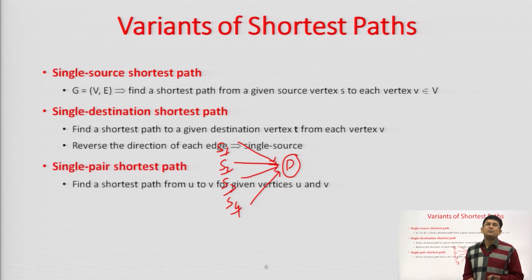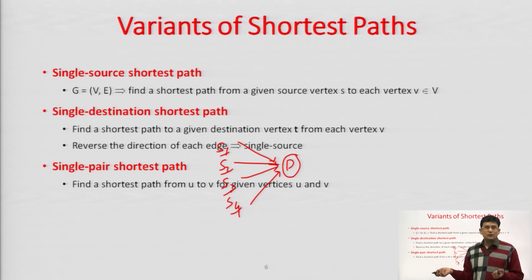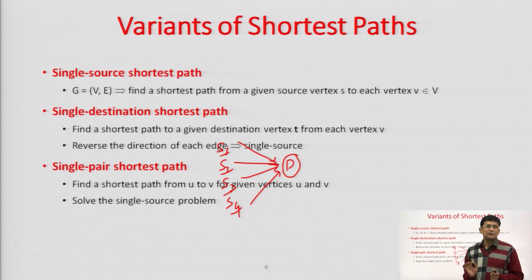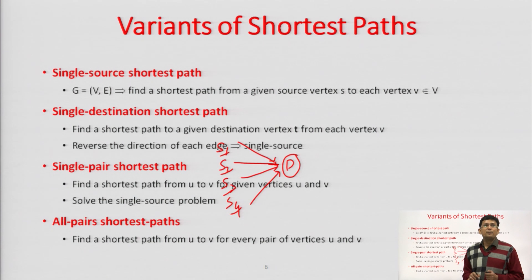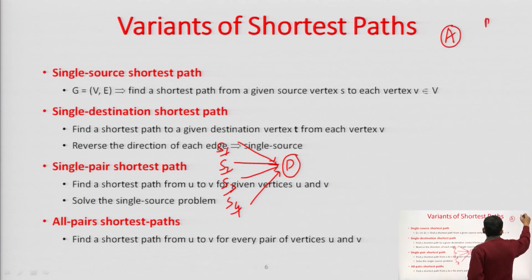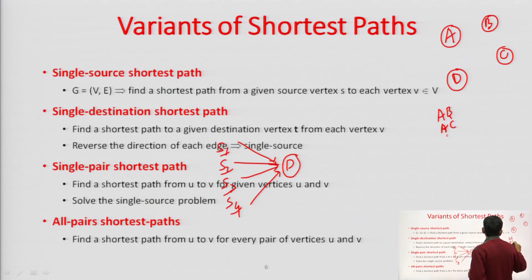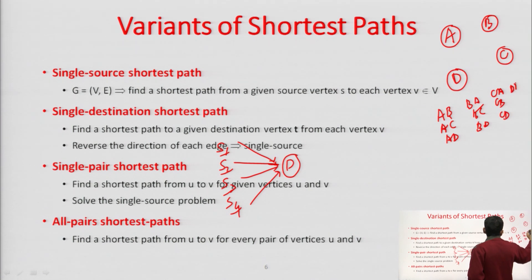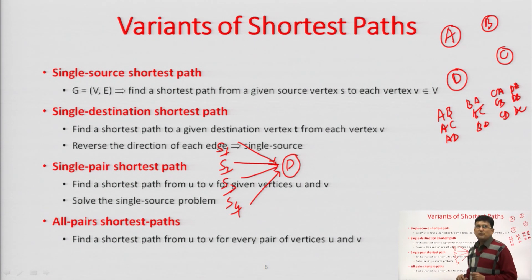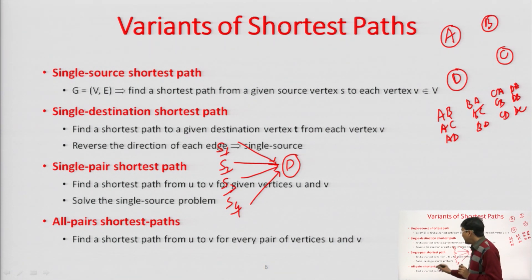There may also be a situation where a single pair shortest path has to be found — for example, booking a cab, where you specify one source and one destination. You apply single source shortest path with the specified source, execute it, and get the answer. Finally, for the all pair shortest path, you have to find the shortest path between every possible pair of vertices. For a graph with A, B, C, D, the possible pairs are AB, AC, AD, BA, BC, BD, CA, CB, CD, DA, DB, and DC.